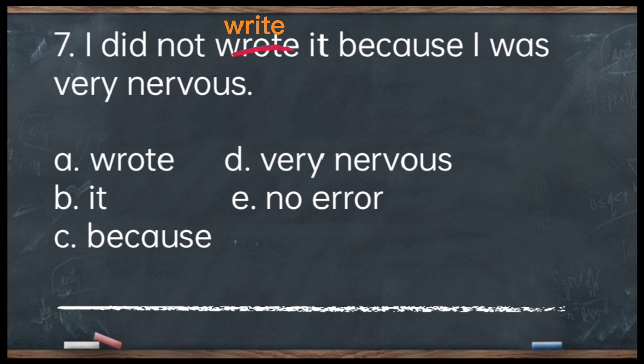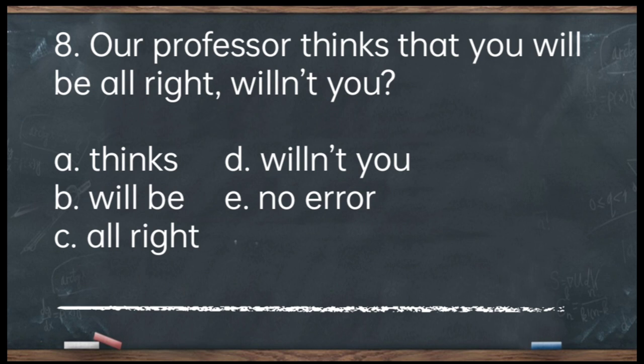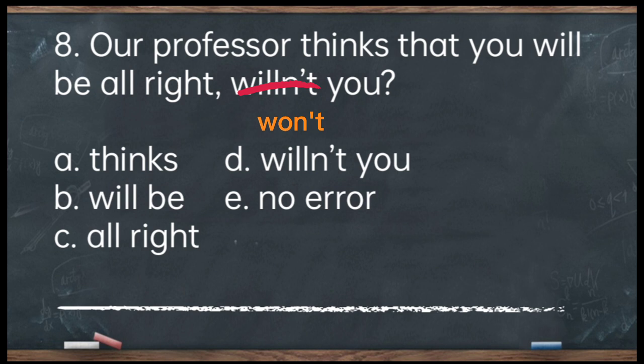Number 8. Our professor thinks that she will be alright, won't you? A. Thinks. B. Will be. C. Alright. D. Won't you. E. No error. The answer is letter D — the tag question 'willent you' is not properly written. The correct tag question should be 'won't you.' Corrected: Our professor thinks that she will be alright, won't you?